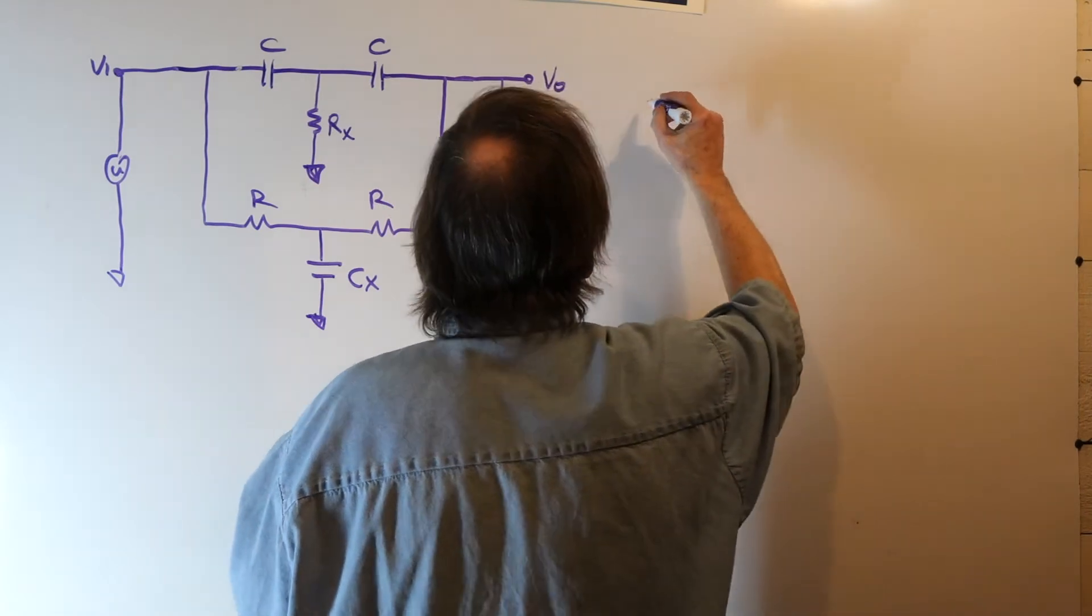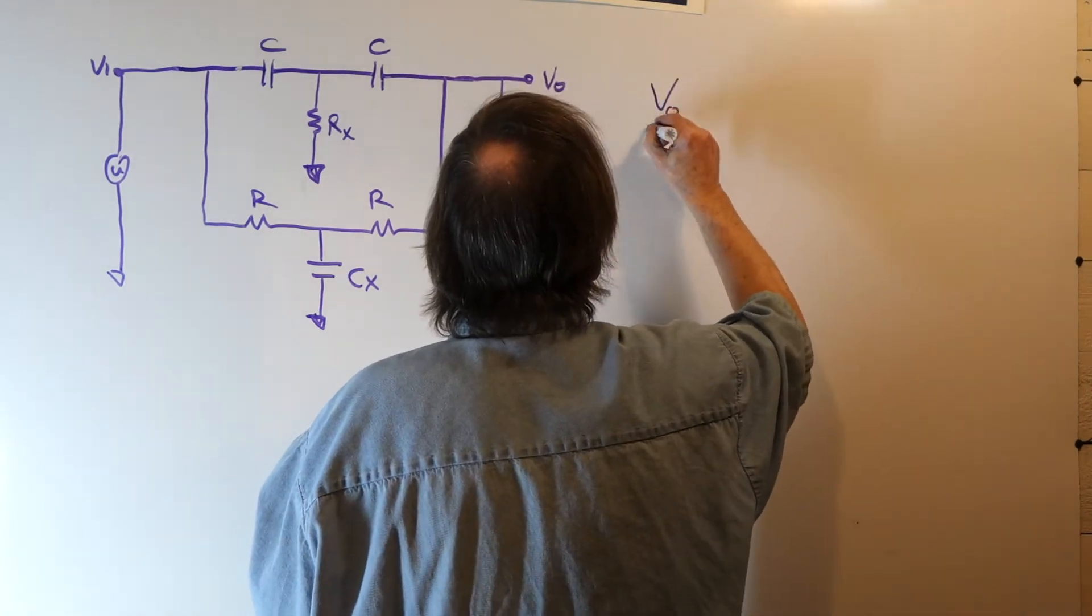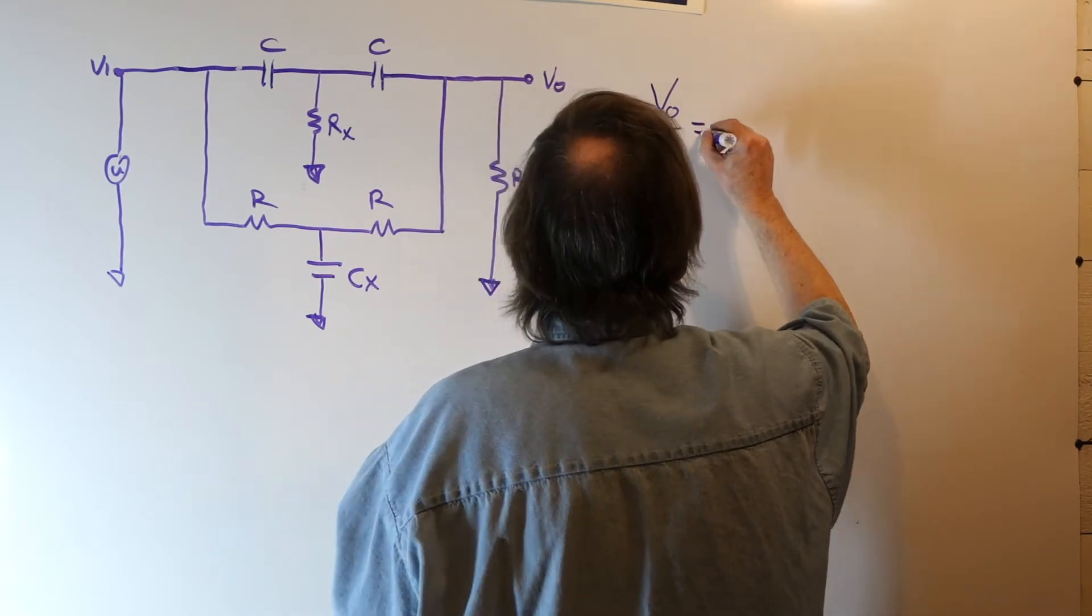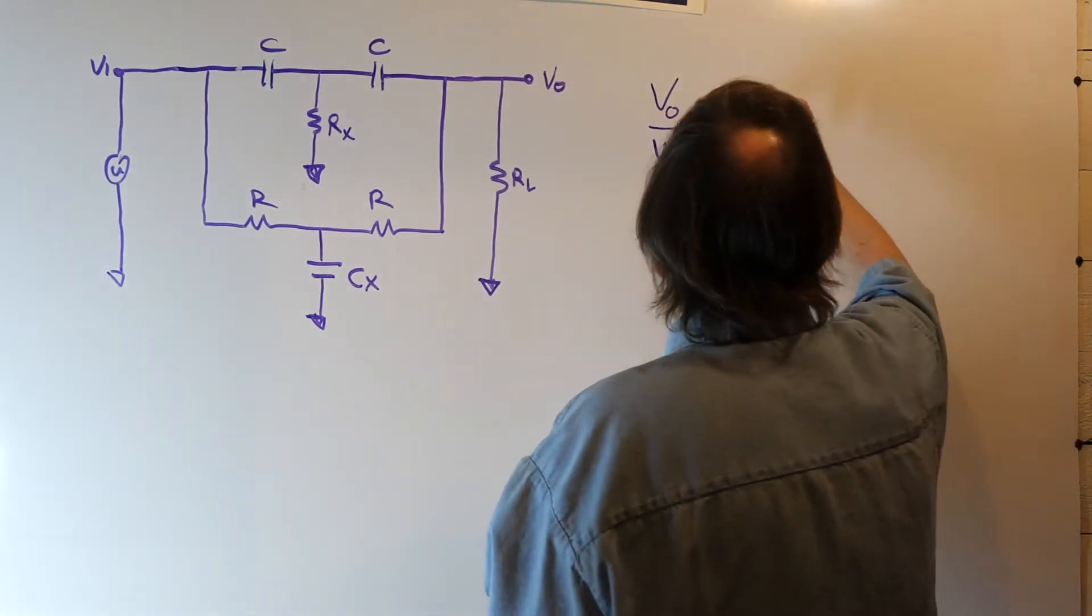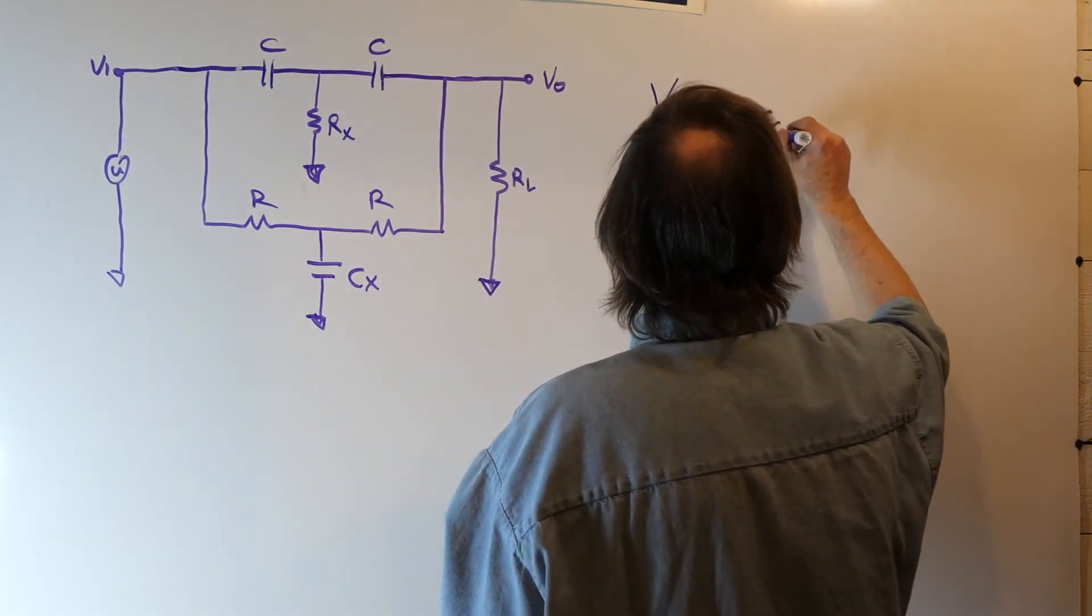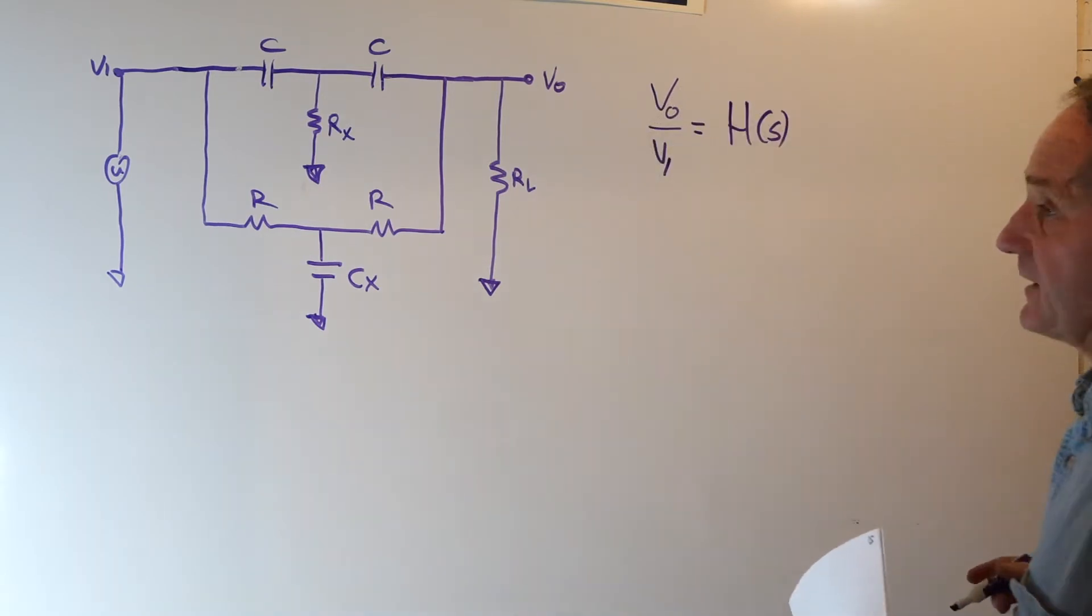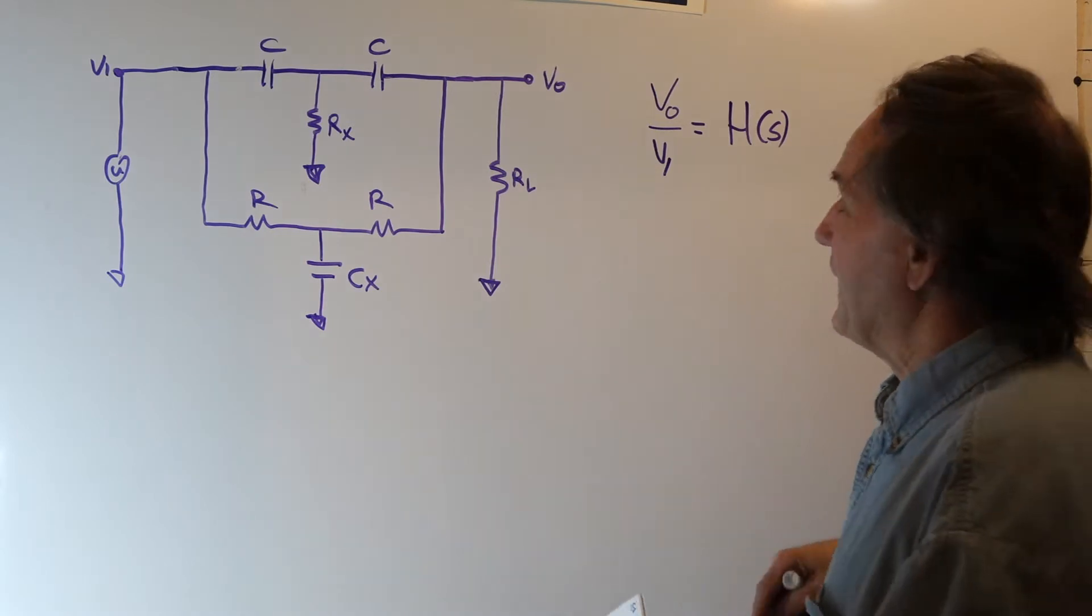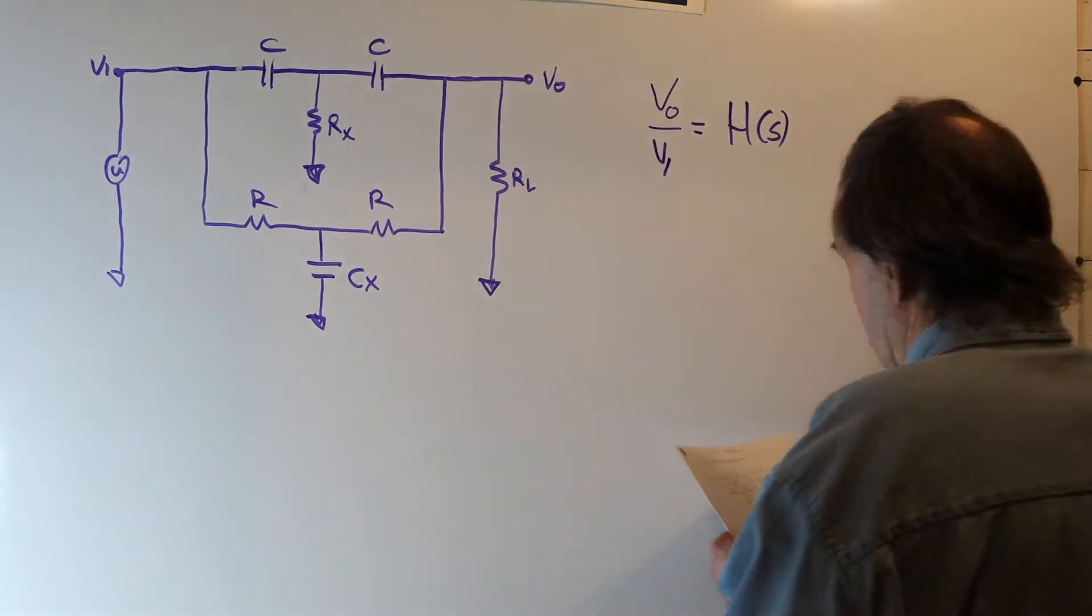I'll just give you a little bit of basics here. If we ratio the output voltage to the input voltage, this is called a transfer function. In the S domain, this is some H of S. If you're dealing with phasors, this will be H of omega or H of J omega.